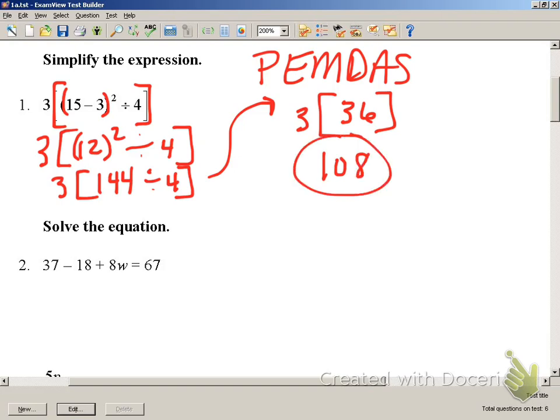Number 2, solve the equation. We want to isolate the variable. Undo the operations and isolate for the W. We need to combine 37 and negative 18. By combining those, we get 19.